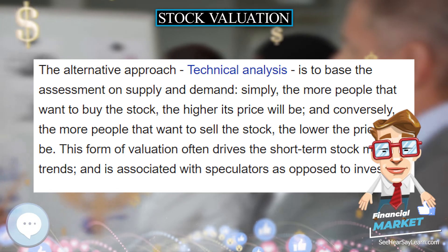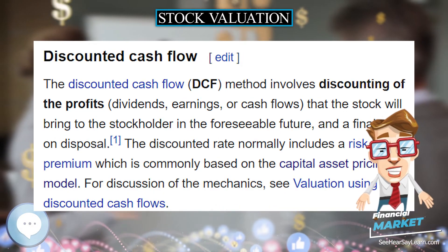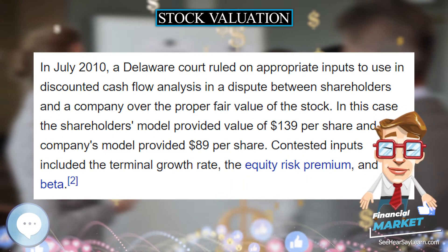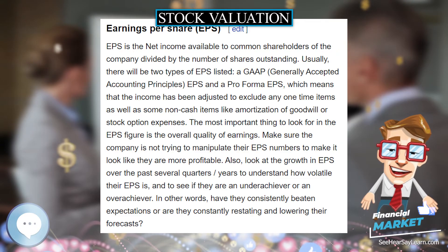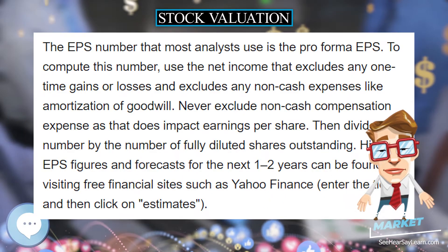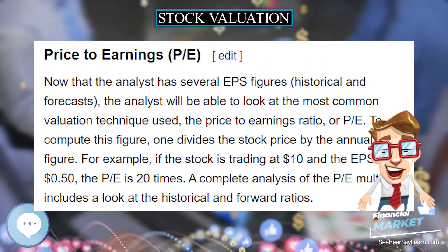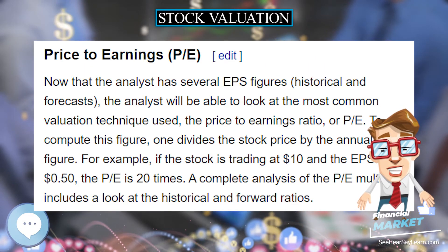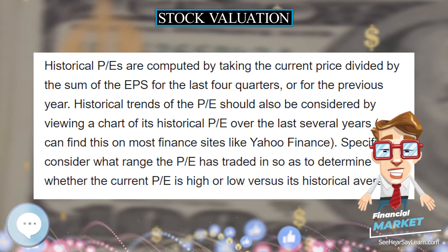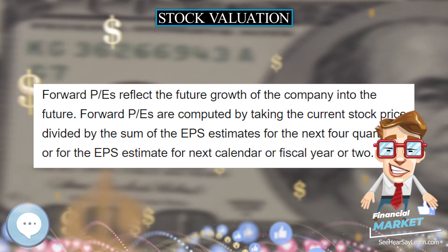Return on Assets (ROA). Similar to ROIC, ROA, expressed as a percent, measures the company's ability to make money from its assets. To measure the ROA, take the pro forma net income divided by the total assets. However, because of very common irregularities in balance sheets due to things like goodwill, write-offs, discontinuations, etc., this ratio is not always a good indicator of the company's potential. If the ratio is higher or lower than expected, one should look closely at the assets to see what could be over- or understating the figure.